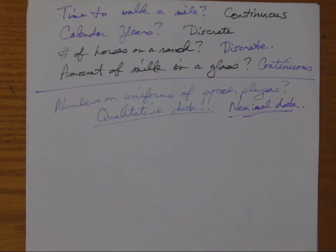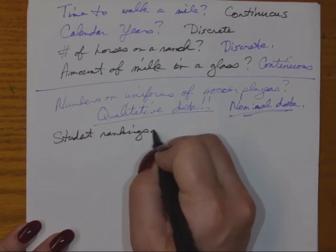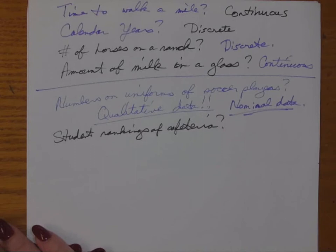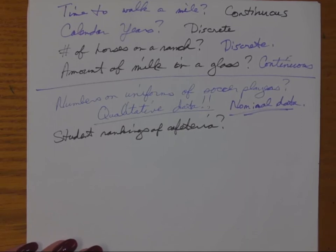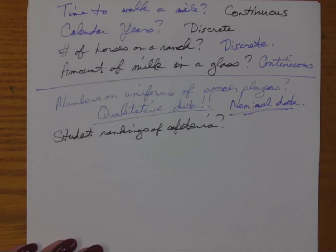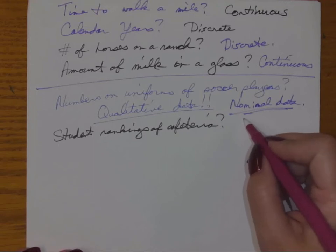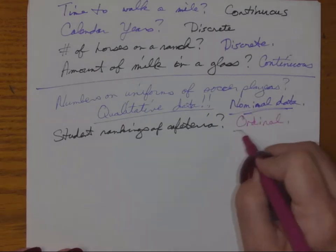Next: student rankings of the cafeteria. Whether it's excellent, good, fair, poor, or three-star, four-star, five-star — ranking the cafeteria describes its quality, not measuring or counting it. So if you can link it back to 'quality,' it's qualitative. But rankings do give an order — five-star is better than two-star. So it's not nominal; it's actually ordinal data.